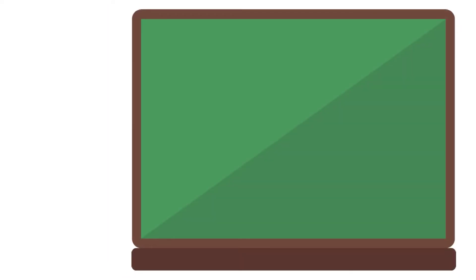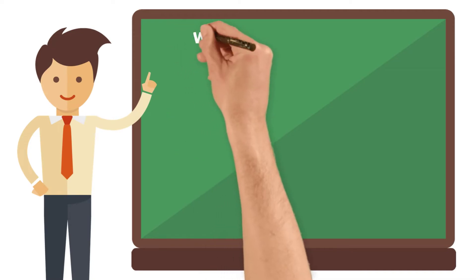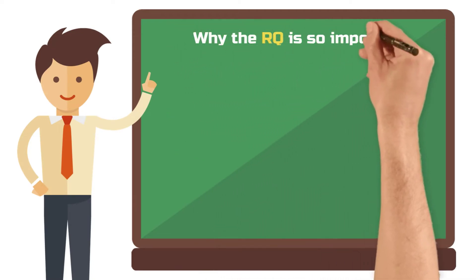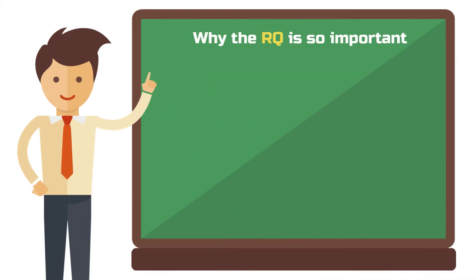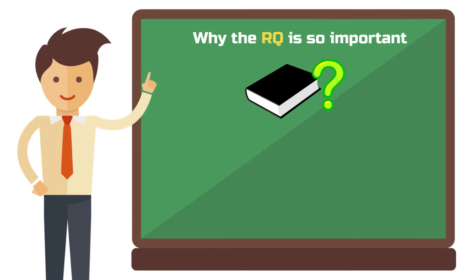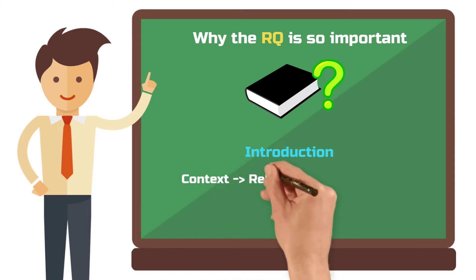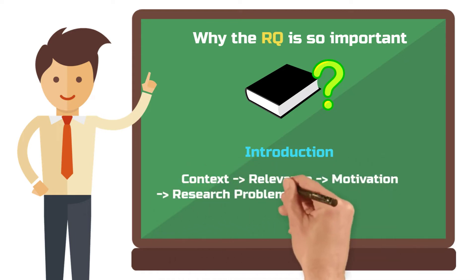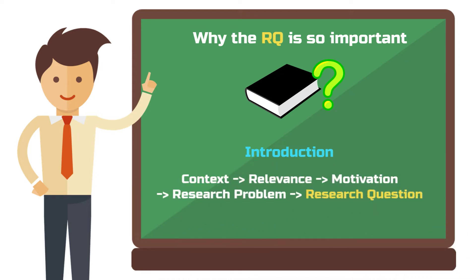The research question of your paper or thesis is the holy grail in your quest for a good grade. Since you want to follow a strong argument in your paper, you should first pose an existing problem at the beginning of it. Subsequently, at the end of the introduction, you then set up the research question. It will be the reader's guide for your scientific work from now on.